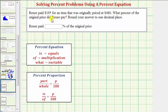Rene paid $195 for an item that was originally priced at $480. What percent of the original price did Rene pay? And we're asked to round to one decimal place.